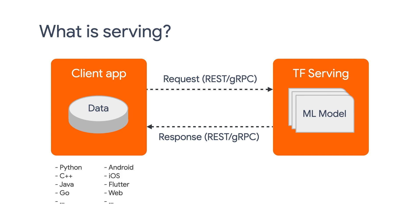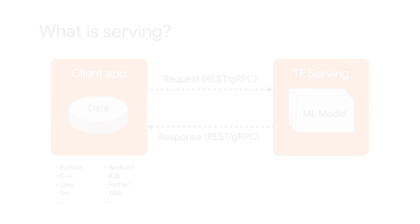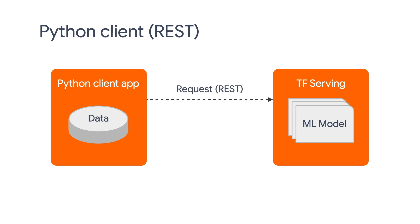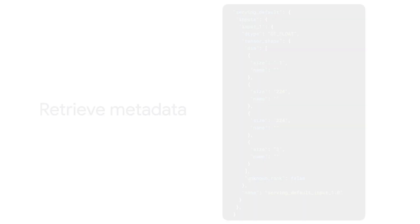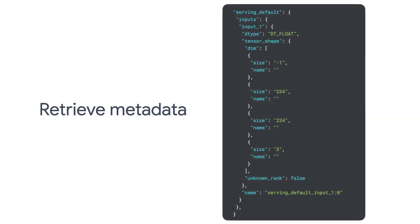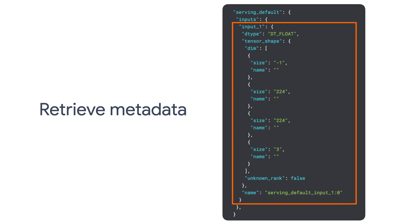It turns out that there are many clients in different languages and platforms you can use. Let's first take a look at a very common one using Python to send REST requests. To demonstrate this, let's first download the REST model from TensorFlow Hub and start TF Serving with Docker. Once the model server is up, we can check out the model metadata in this link.